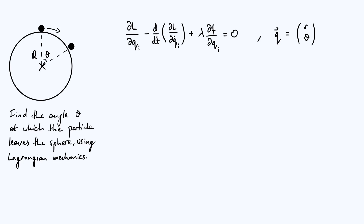What about f that appears in the extra term? f is a function of the generalized coordinates, f of r and theta, and it's supposed to always equal zero — that defines the way the particle is constrained to move. In this case, until the particle leaves the surface of the sphere, it's subject to the constraint r minus capital R equals zero, where capital R is the radius of the sphere. This enforces that lowercase r always equals the constant radius capital R. Since f doesn't depend on theta, df/d_theta is just zero.